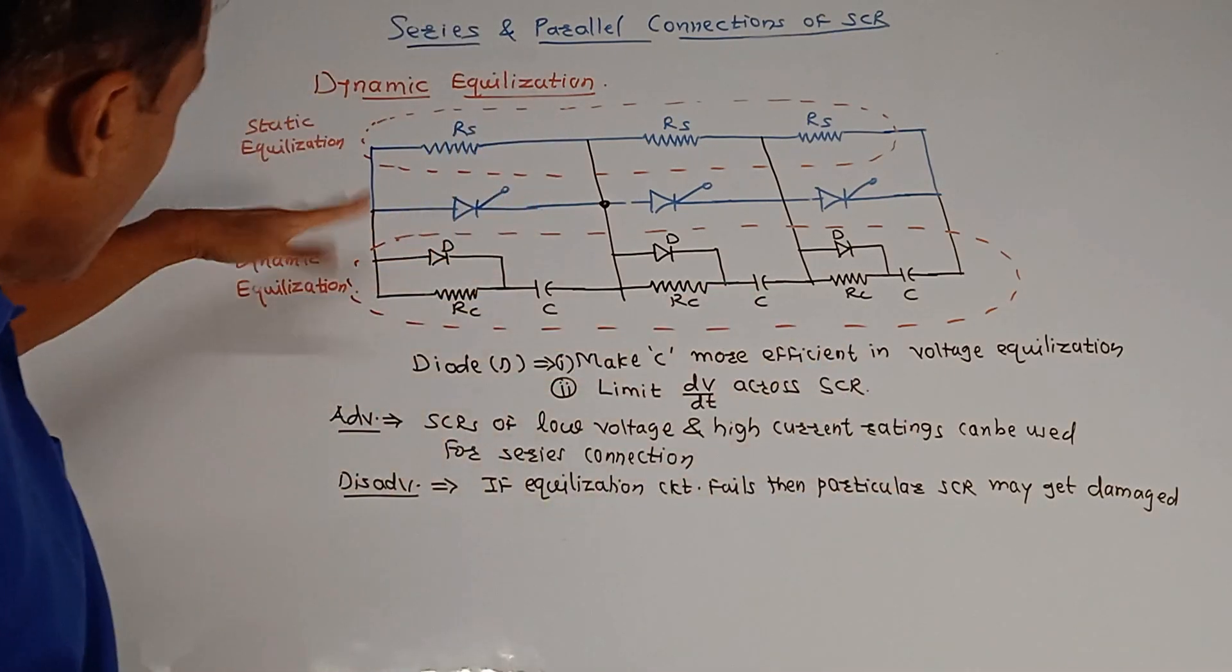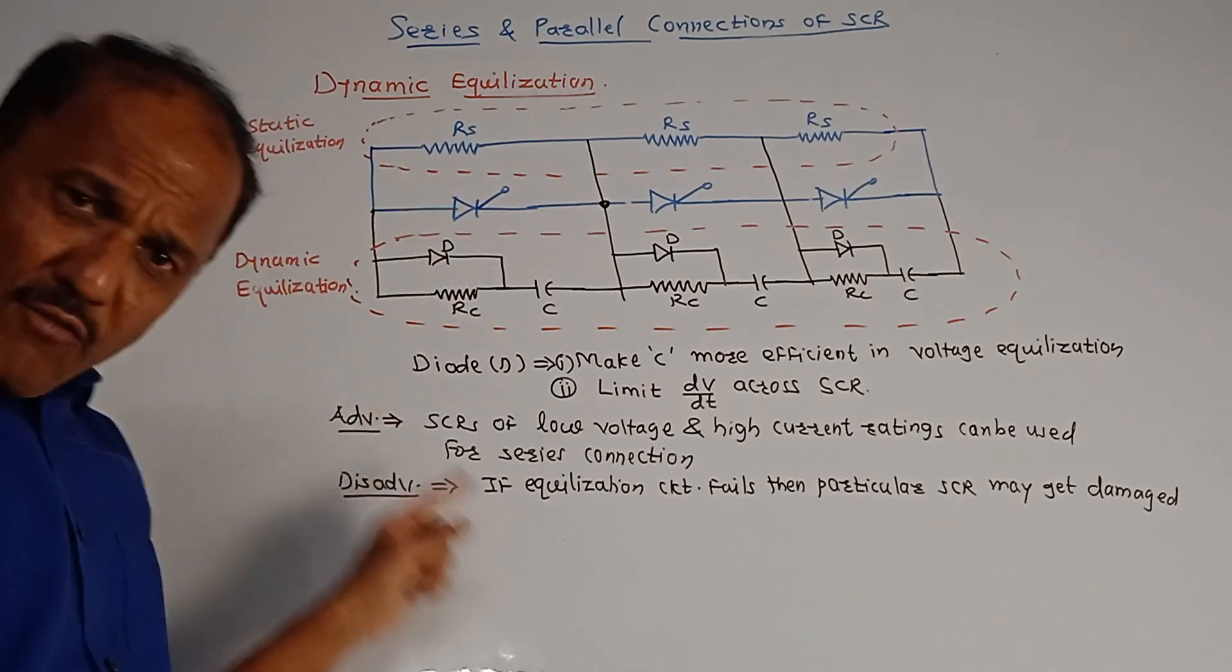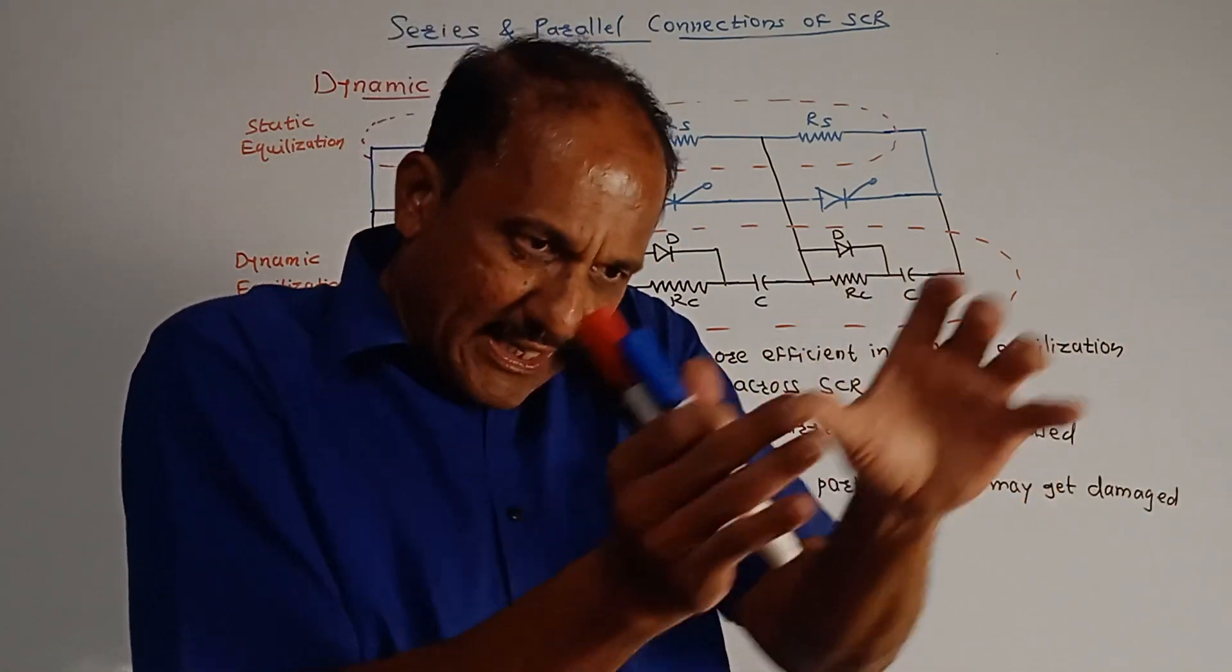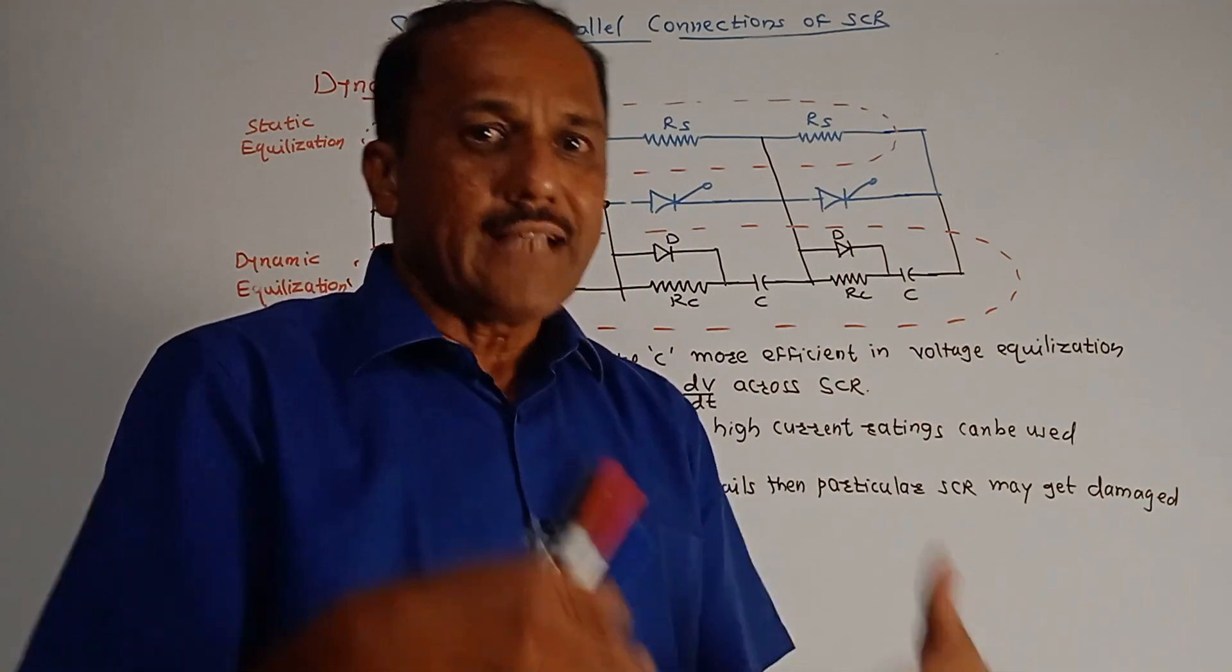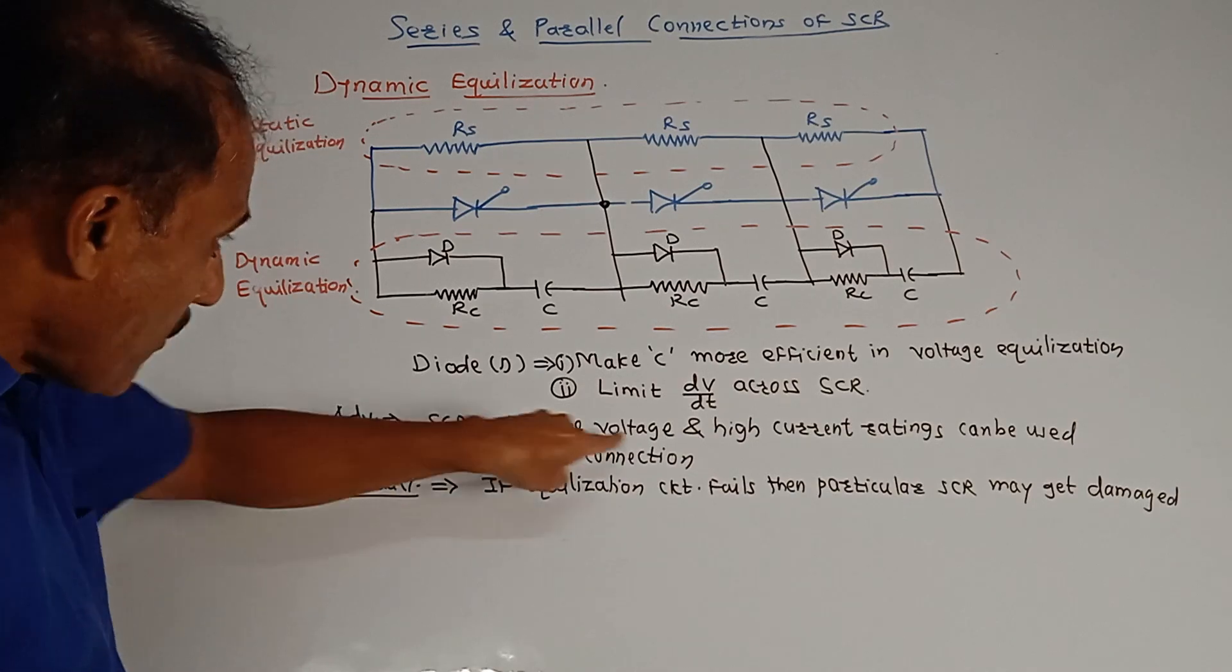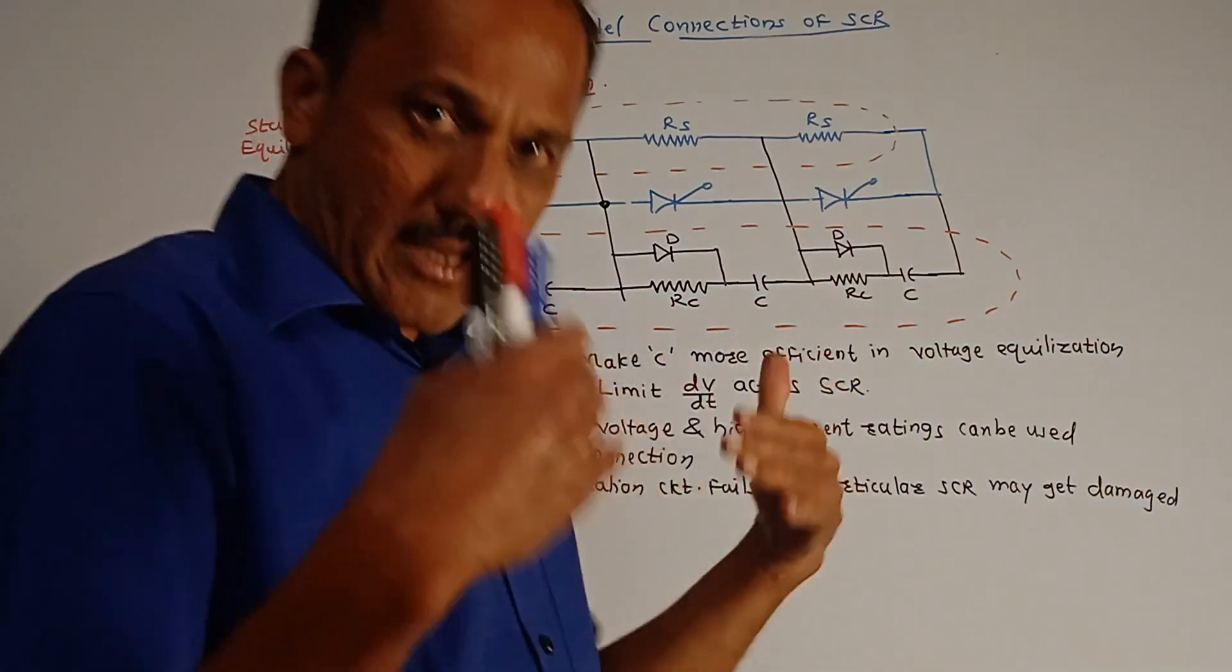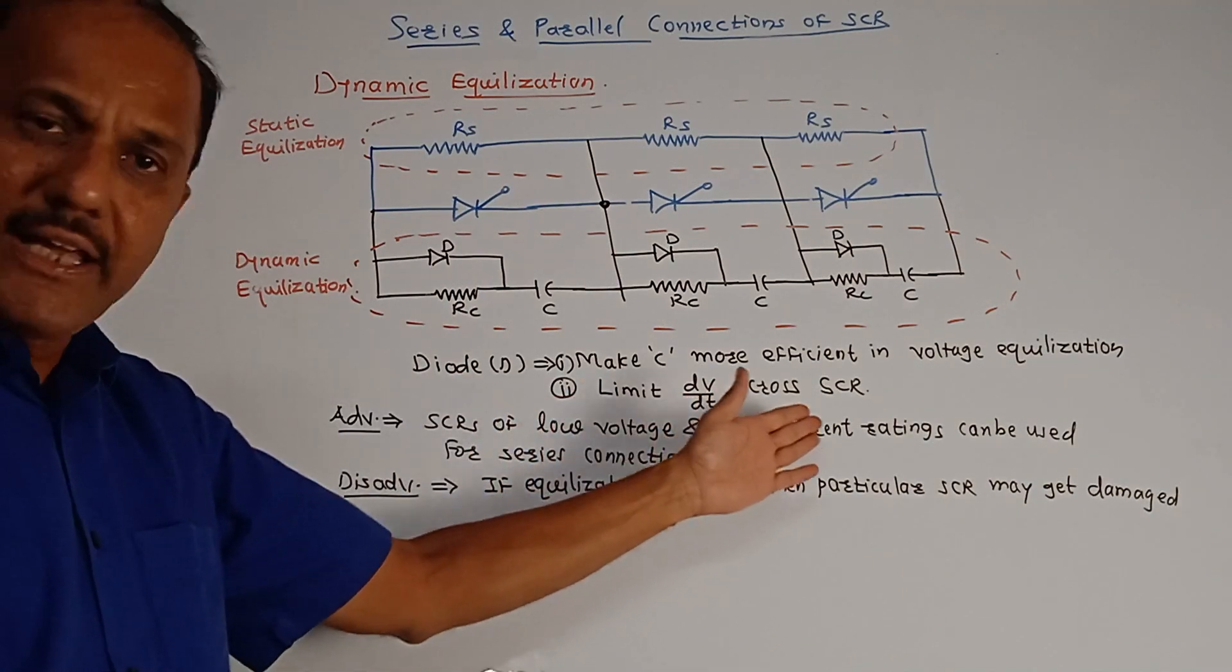Now, some advantages and disadvantages of series connections of SCR. If you are using series connections of SCR, depending on the requirement, depending on the application, the number of SCRs that are going to be used in the series connection depends on the requirement of output voltage. SCRs of low voltage and high current ratings can be used for series connection. So this combination can be a cheaper option because you are going to use SCRs having lower voltage and higher current ratings as individual SCR, and then we are making a series combination.